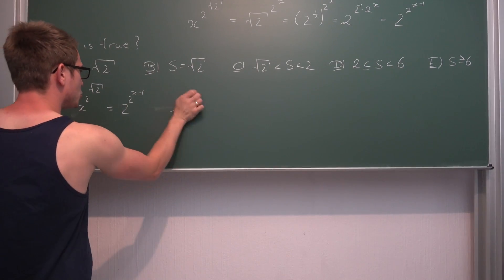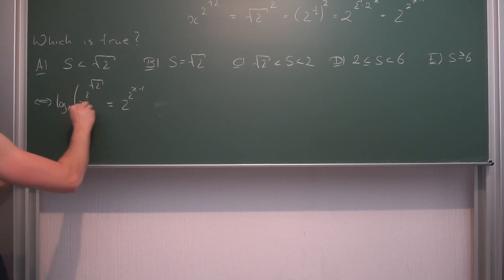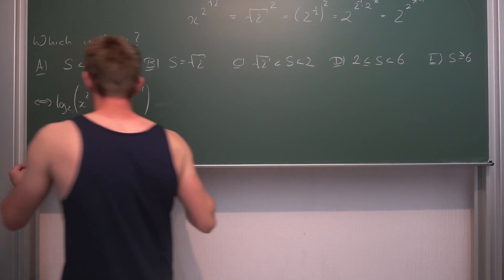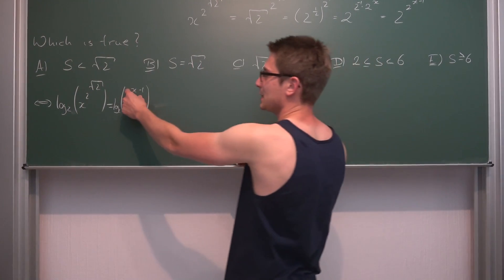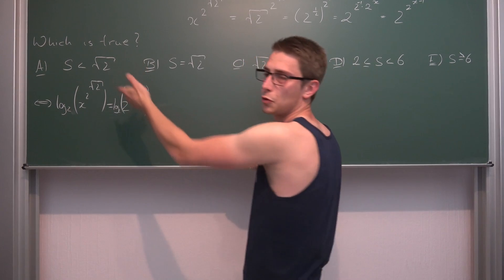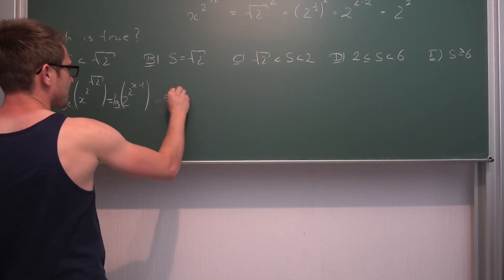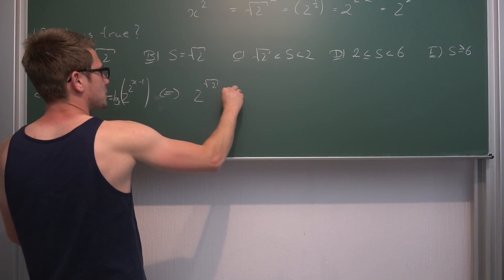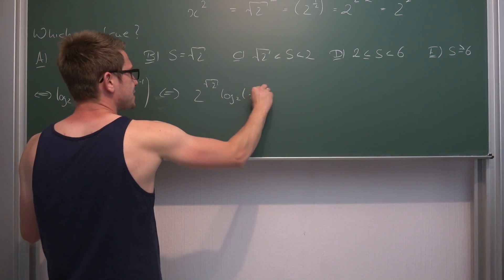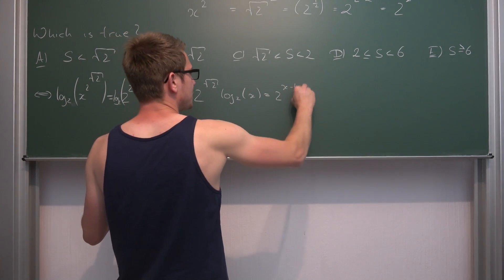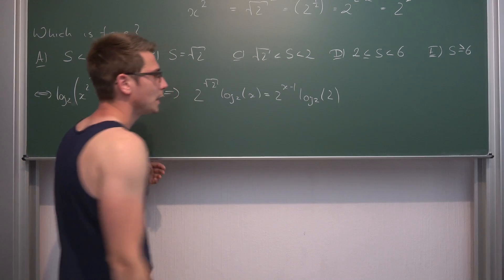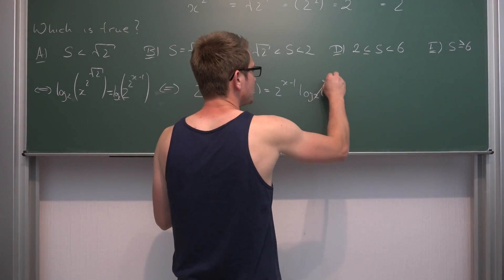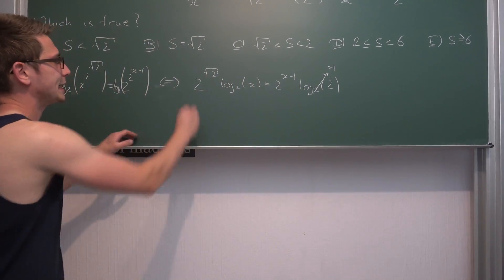If we apply log base 2 on both sides, then since the exponents can be brought to the front using logarithm properties, we get the equation: 2 to the square root of 2 times log base 2 of x, equals 2 to the x minus 1 times log base 2 of 2. By definition, log base a of a equals 1, giving us this simplified equation.